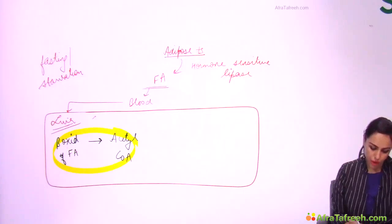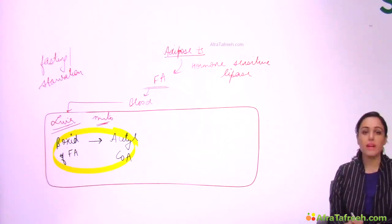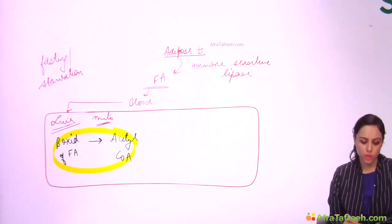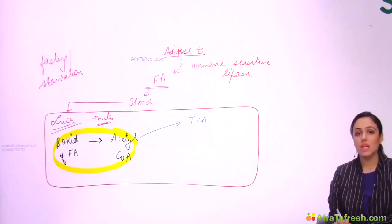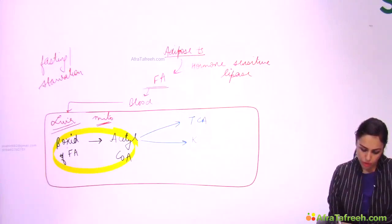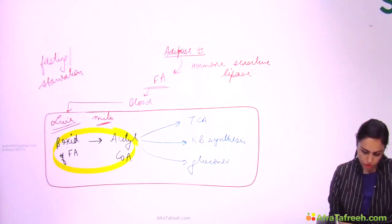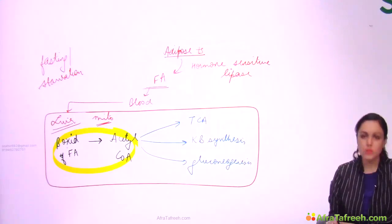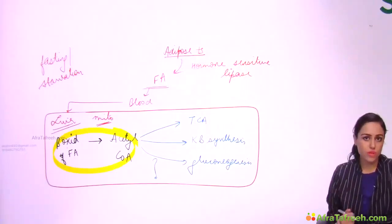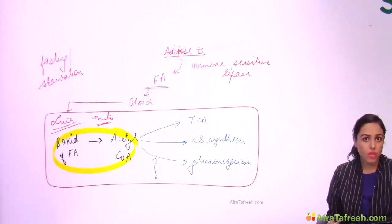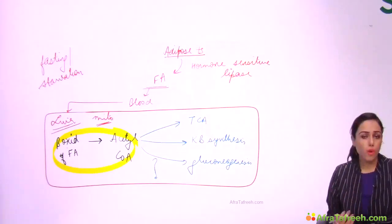Beta-oxidation is a catabolic pathway, so it occurs in the mitochondria of the liver cell. This acetyl-CoA in the mitochondria can go into the TCA cycle, into ketone body synthesis, or into gluconeogenesis. However, the arrow from acetyl-CoA to gluconeogenesis needs clarification — acetyl-CoA is never glucogenic, as the link reaction is irreversible.